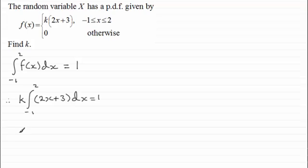And integrating this in the usual way, we have k times, and I'll just put this in square brackets, integrating 2x with respect to x gives us x squared, and the 3 just gives us 3x. So finish off that square bracket there, and put in our limits between minus 1 and 2, and that should equal 1.